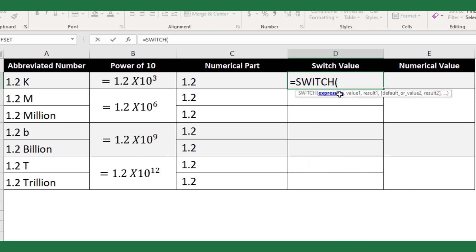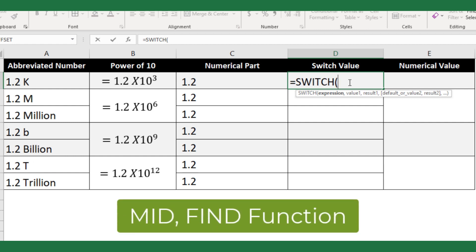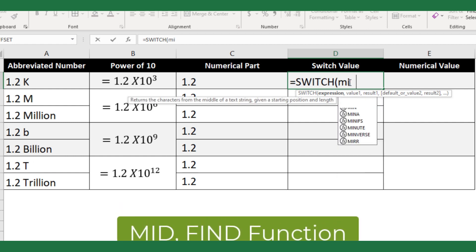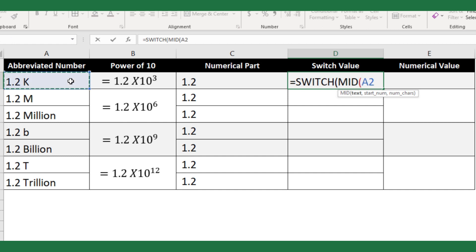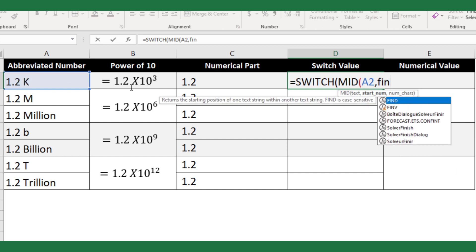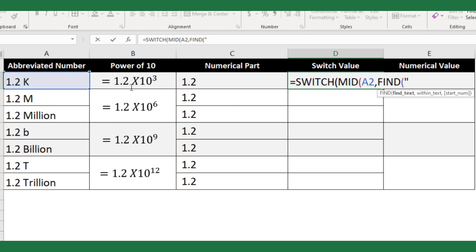For the expression argument, I need to extract the suffix letter from the given text string to compare the intended values. For this, I will use Excel MID and FIND functions. So, MID. Text argument will be cell A2. For start num argument, I will use FIND function. Then, FIND.